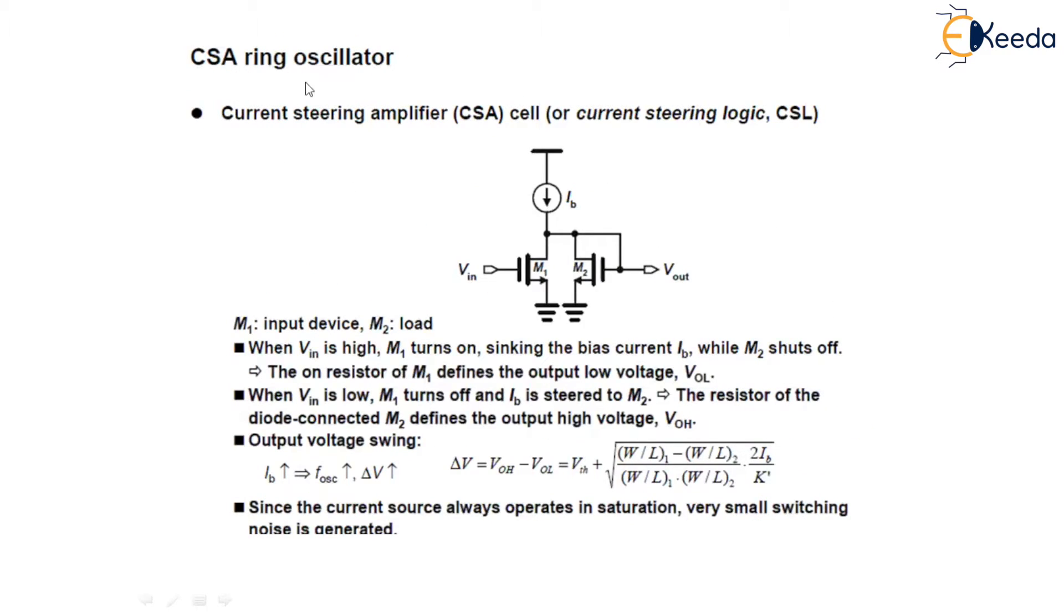The current steering amplifier ring oscillator. This is the ring oscillator which is also a current steering amplifier. The M1 is the input device where M2 is the load. When V_IN is high, M1 turns on which sinks the bias current I_MD while M2 shuts off. The on-resistance of M1 defines the output low voltage V_OL. When V_IN is low, M1 turns off and I_B is steered to M2. The resistance of the diode-connected M2 defines the output voltage V_OH.